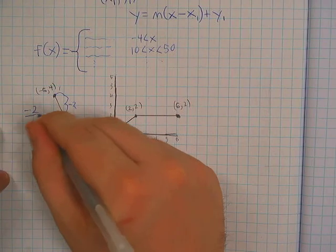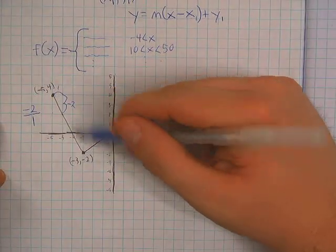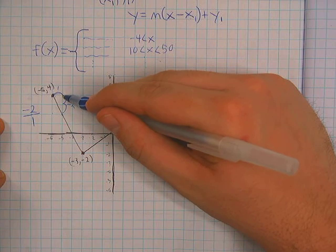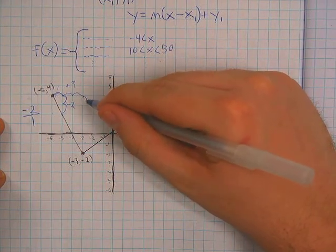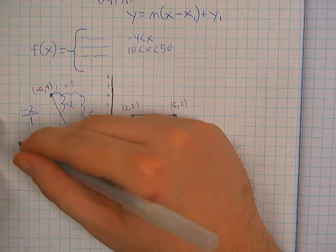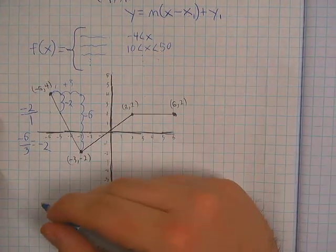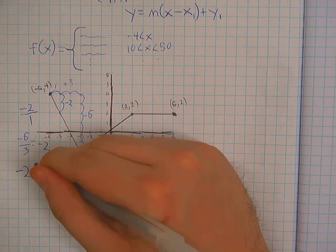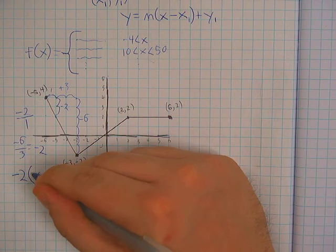You could also go from the starting point to the ending point of this line, in which case you'd have a run of three and a rise of negative six. Negative six over three is still negative two. So our equation for this line will be negative two times, in parentheses...